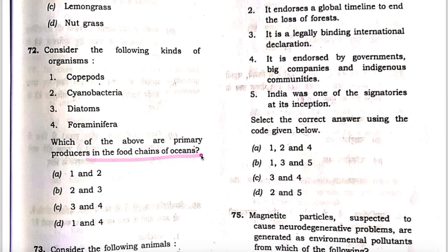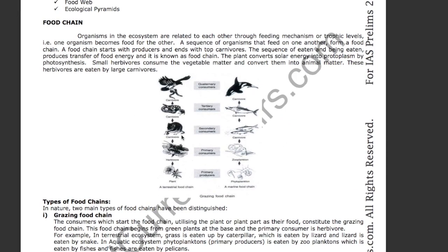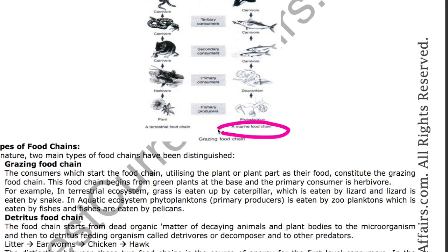This is our environment book for IAS Prelims 2021, on page number 9. We have mentioned the food chain and different types of food chain. This food chain starts with the plant. The plant converts solar energy into protoplasm by photosynthesis.